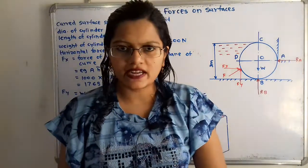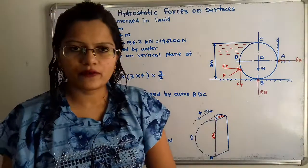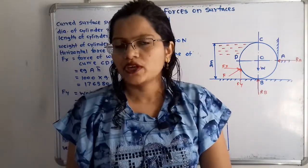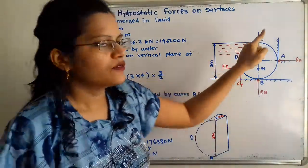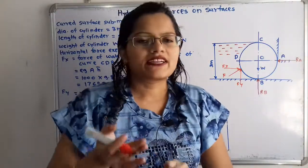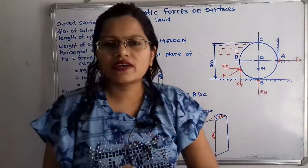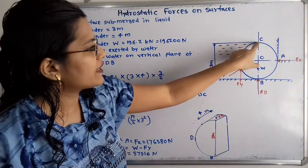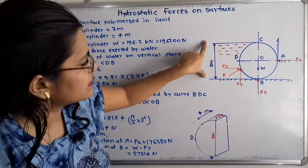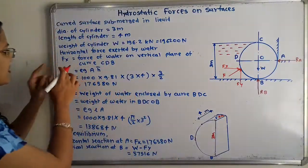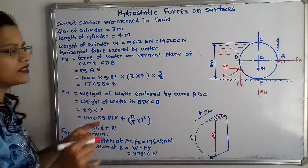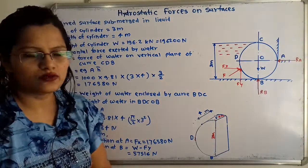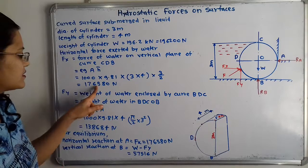The area of the vertical plane is 3 multiplied by 4. The value of h-bar is the distance of the center of gravity from the free surface of water. The total height of the curve is 3 meter, so the center of gravity is at 3 divided by 2. The free surface of water is up to point C. Using the formula FX = ρ·g·A·h̄, with ρ = 1000, g = 9.81, A = 3×4, and h̄ = 3/2, we get FX = 176,580 Newton.